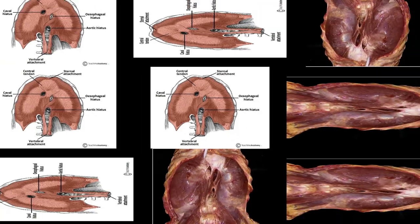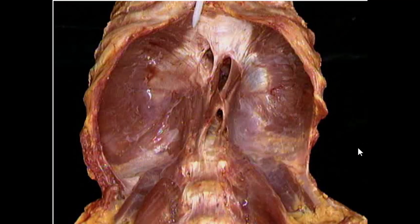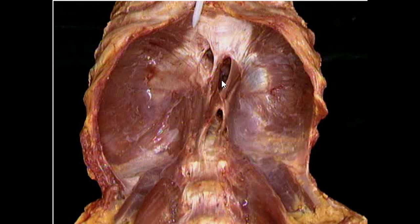As promised, here is a real-life specimen of the diaphragm. You can see the attachments to the rib cage, the sternum, and the vertebrae. The clear, lighter area in the center is the central tendon. You can identify the caval opening with the inferior vena cava and right phrenic nerve, the esophageal opening with the esophagus, vagus nerves, and left gastric vessels, and the aortic hiatus at T12 where the aorta, thoracic duct, and azygos vein pass through. T8, T10, T12 — that's it for the diaphragm!